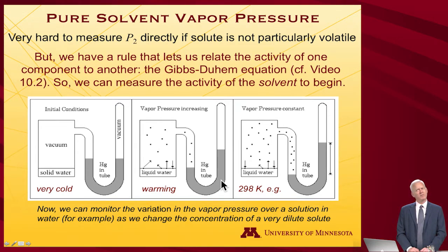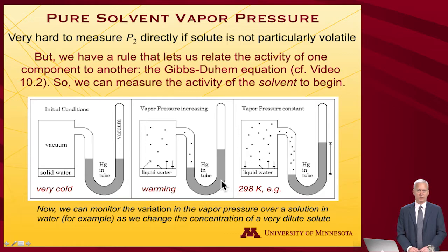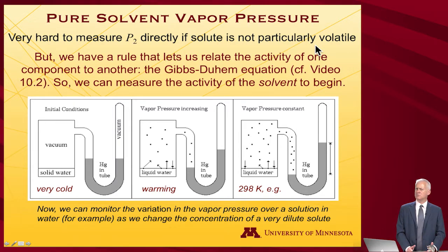But if we consider the solute to be a solid — and not too long from now we'll consider the possibility of salts as solutes; up till now I haven't really distinguished between electrolytes and non-electrolytes — the vapor pressure may be vanishingly small. So if you have a solute that's not particularly volatile, how do you go about trying to measure the vapor pressure of that minority component above the liquid solution?